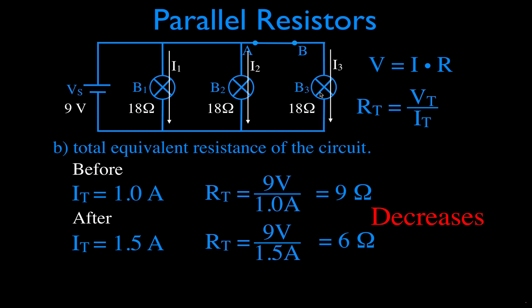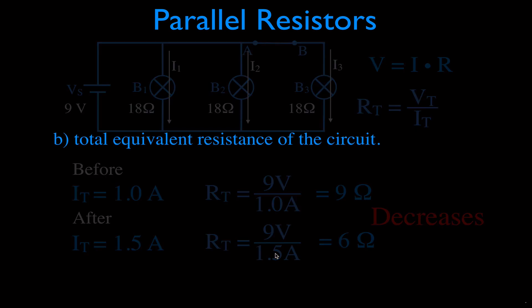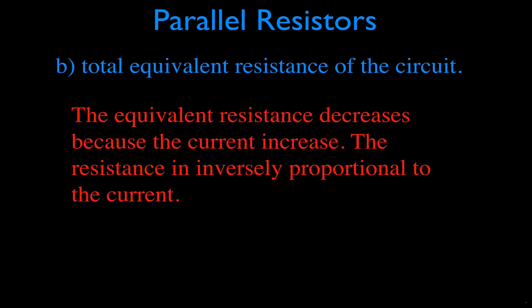That's a little confusing for some people — you add a resistor, how could the resistance decrease? For parallel circuits, it doesn't work that way. The reason we know resistance decreased is because the current went up. More current means less resistance; those things are inversely proportional to each other. The equivalent resistance decreases because the current increases — if the current is in the denominator and we increase the current, the resistance goes down.